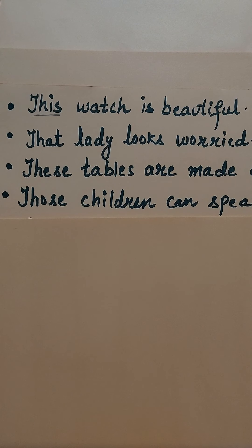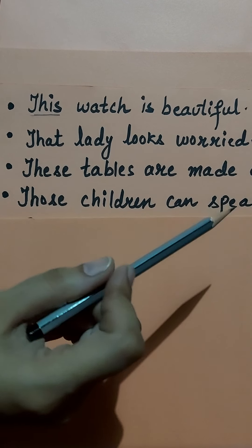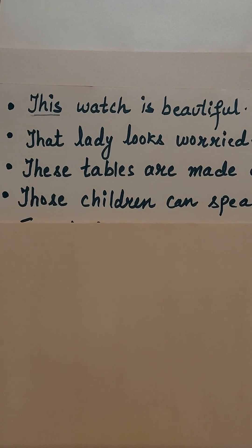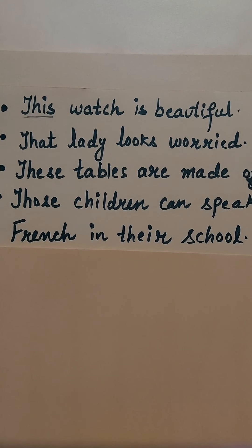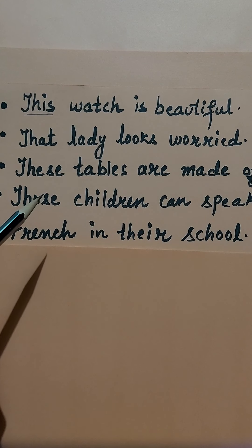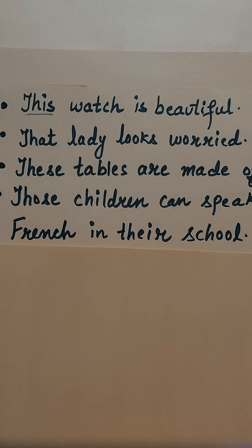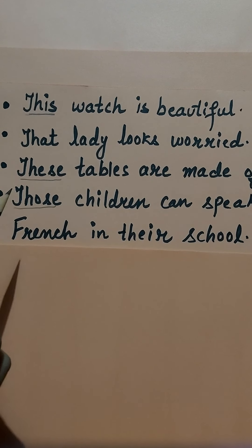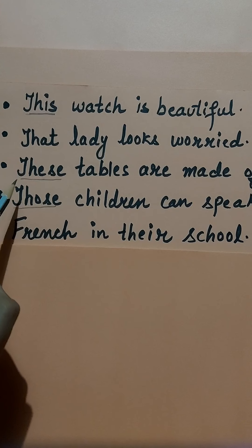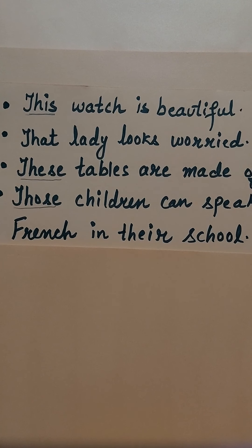Now look at the next two sentences: 'These tables are made of wood' and 'Those children can speak French in their school.' When I say 'these tables' and 'those children,' I point out the tables and the children. So 'these' and 'those' are demonstrative adjectives because they answer the question 'which one' — which tables are made of wood? These tables.